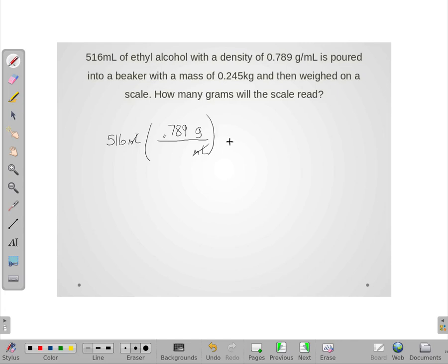Alright, when I multiply that, I'll get the mass of ethyl alcohol, which is going to go into that beaker. So I'm going to add that to the mass of the beaker, but I'm going to go ahead and rewrite the mass of the beaker from 0.245 to 245 grams because it does want my answer in grams.